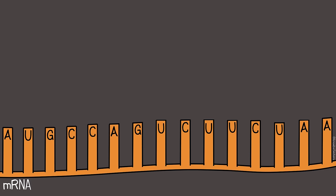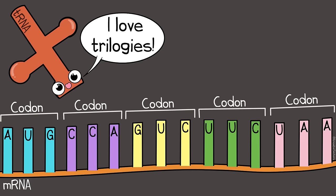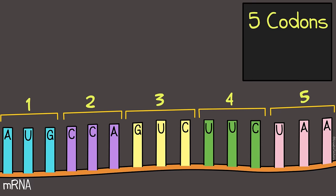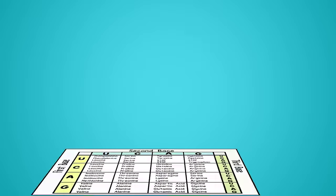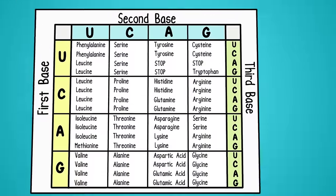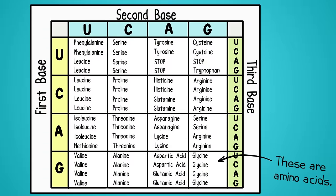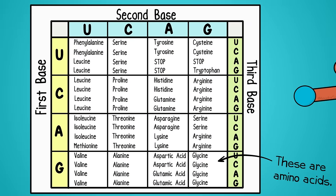Notice how these mRNA bases are written here in groups of three? Each is a codon. Bases are read in threes, so a codon is how these bases will be read. In this example, there are a total of 5 codons—15 individual RNA bases. By reading a codon chart, you can determine the amino acids that will be brought in by the tRNAs.